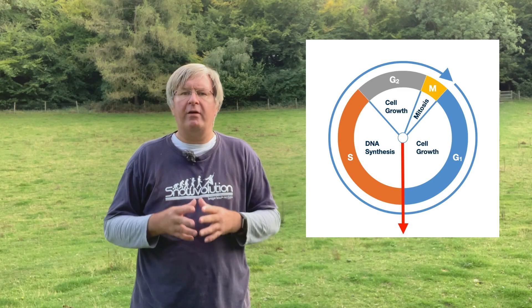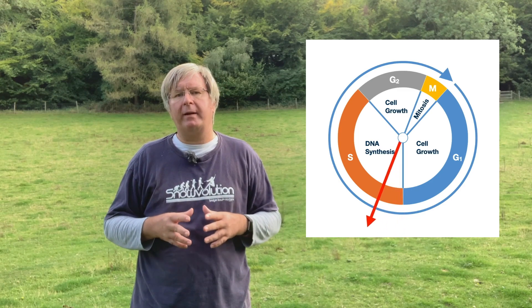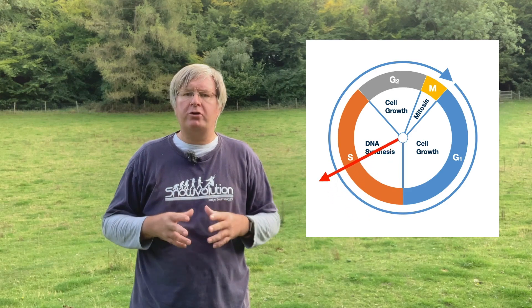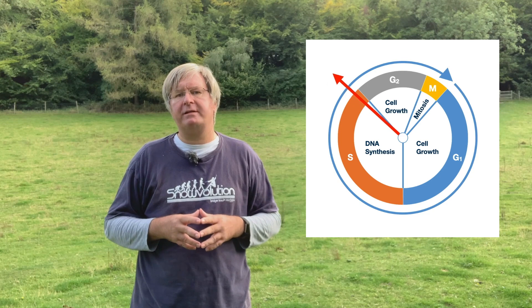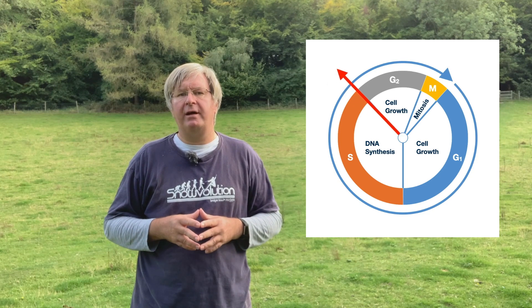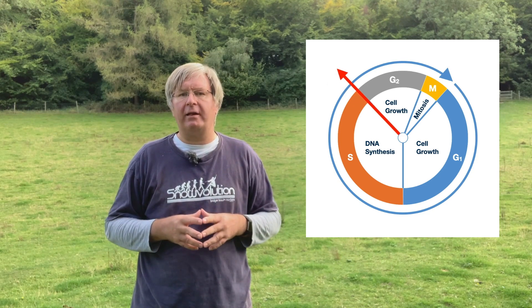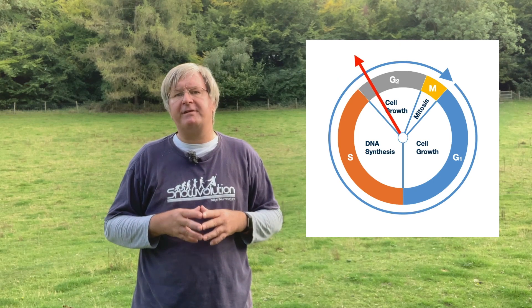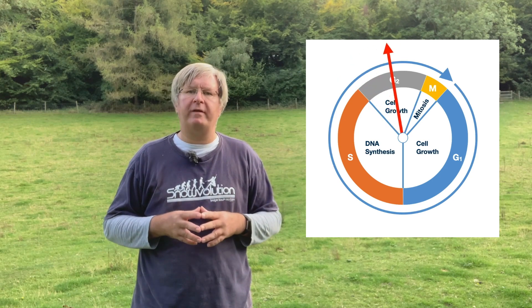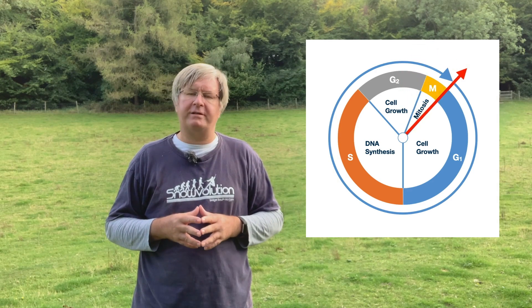If the answer is yes, we kick off the cycle and move to S phase to duplicate the DNA. During S phase, the cell runs checks on its DNA to make sure it is not damaged. If it is damaged, it will repair it and continue, or kill the cell if the damage can't be repaired. If everything is okay with the DNA, the cell will then move into G2 phase and finally on to M phase before returning to G1.